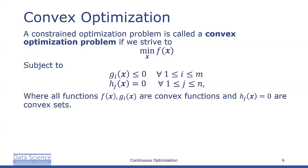In summary, a constrained optimization problem is called a convex optimization problem if the goal is to minimize f(x) subject to the constraints gᵢ(x) ≤ 0 for 1 ≤ i ≤ m and hⱼ(x) = 0 for 1 ≤ j ≤ p. Here the functions f(x) and gᵢ(x) are all convex and hⱼ(x) = 0 are convex sets.